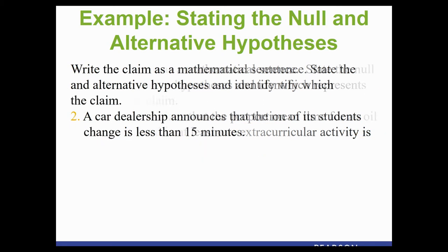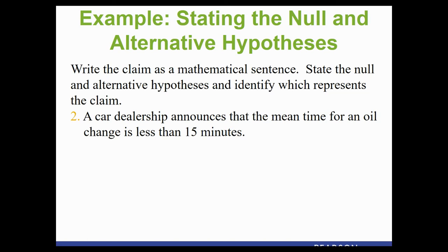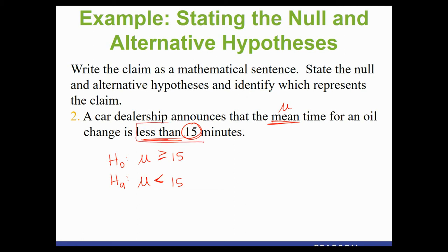Example two: a car dealership announces that the mean time for an oil change is less than 15 minutes. We use mu for mean, comparing to 15. 'Less than' has no equal symbol, so it goes in Hₐ. The complement, greater than or equal, goes in H₀. Because 'less than' comes directly from the wording of our problem, the claim is Hₐ — the alternative hypothesis.